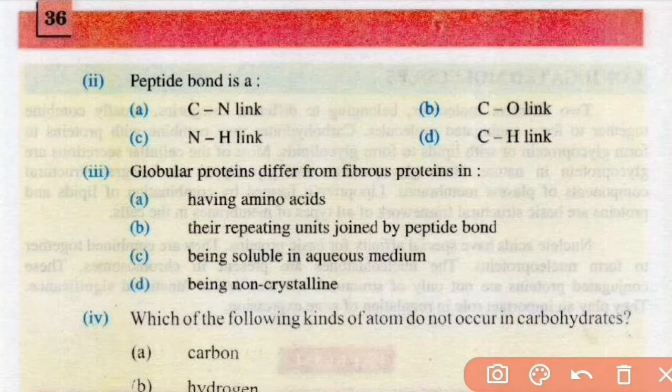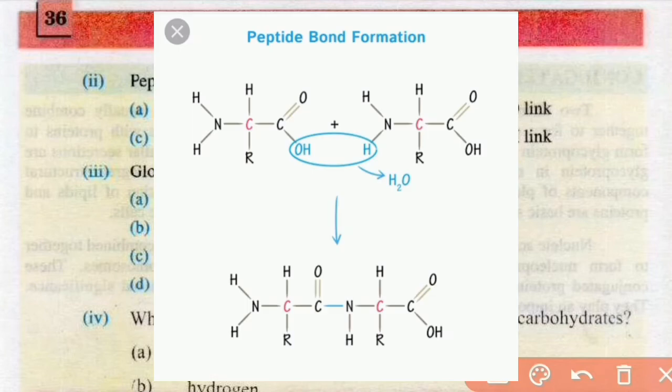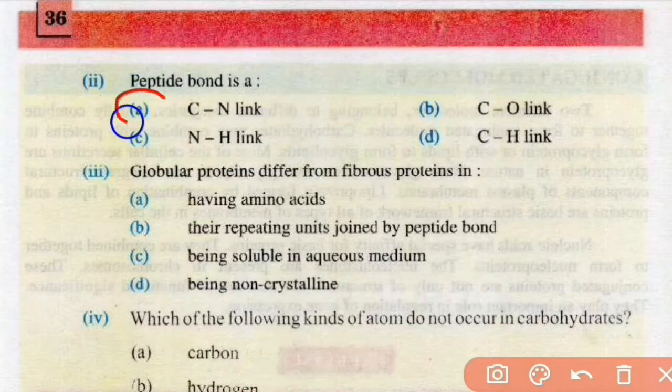Number 2, peptide bond is a carbon nitrogen link, carbon oxygen link, nitrogen hydrogen link, or carbon hydrogen link. Peptide bond mein ek amino acid ka carboxyl group aur doosre ka amino group aapas mein combine hote hain aur carbon nitrogen link banta hai. Right answer is A, C-N link.